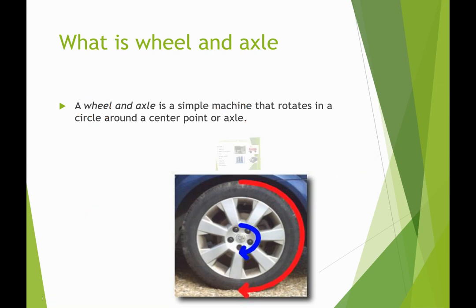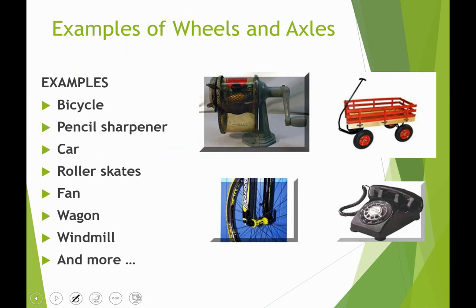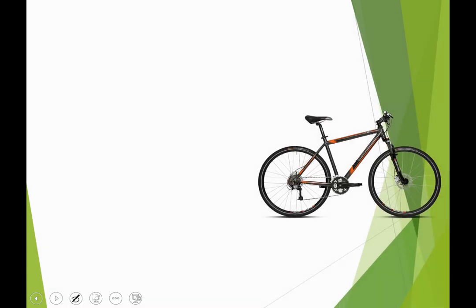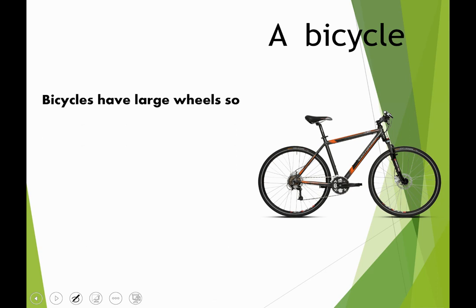Here are some examples of wheels and axles: the bicycle, pencil sharpener, car, roller skates, fan, wagon, windmill, and many more. To sum up, a wheel and axle is a simple machine made of a wheel with an axle connected to the center, and we can use them in many ways.